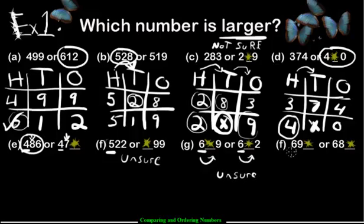And the last one — we have six hundreds and six hundreds, nine tens and eight tens. We have a winner already. No need to check the ones value — this one wins.